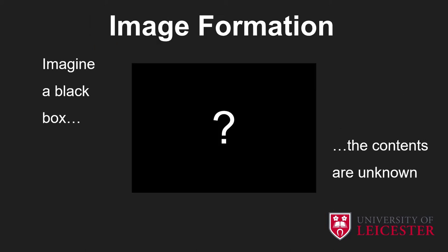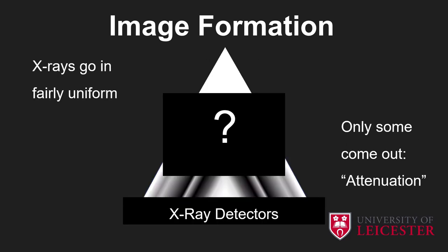So how do we go from there to an actual image? Godfrey Hounsfield initially thought about the problem of CT scanning as having a black box whose contents were unknown but you wanted to know. In CT scanning we start with an x-ray source and shine x-rays through the black box — only some come out and when they do come out they are changed or attenuated, meaning some are absorbed and some are scattered away. Attenuation means the reduction in the intensity of x-rays, secondary to either absorption or scattering.